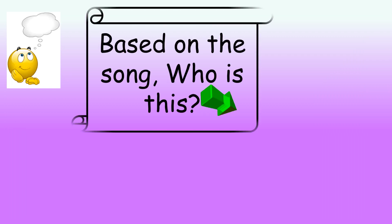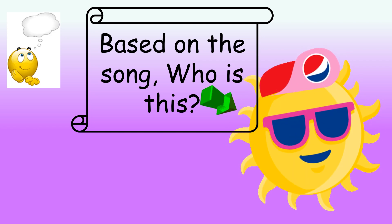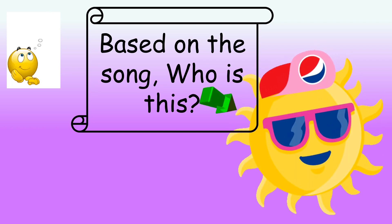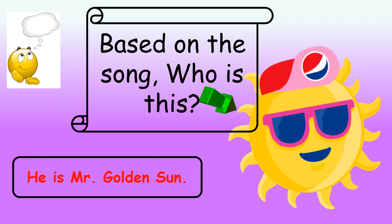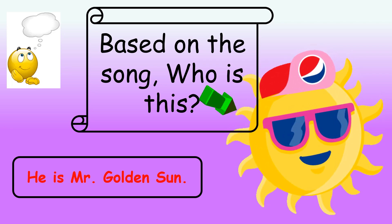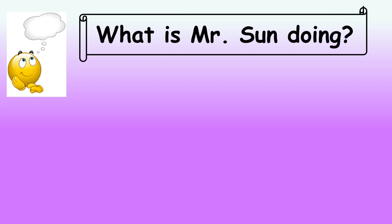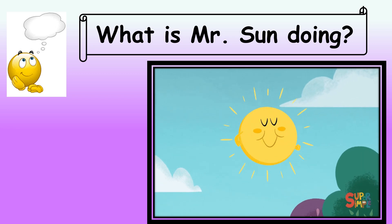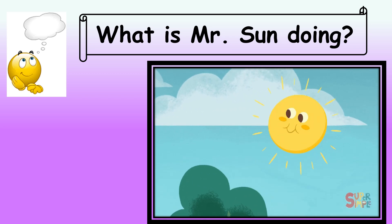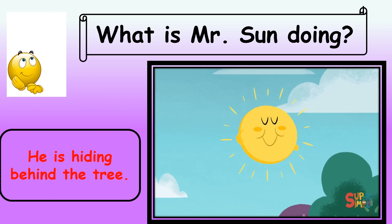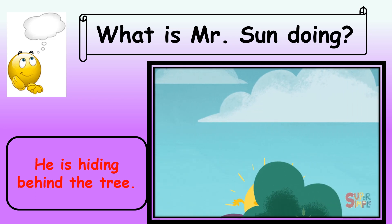Based on the song, who is this? Take a look at the picture. He is Mr. Golden Sun. What is Mr. Sun doing? Look at the picture. He is hiding behind the tree.